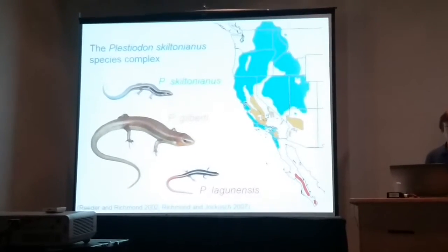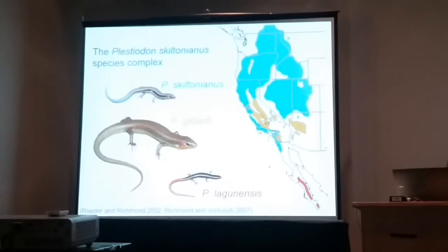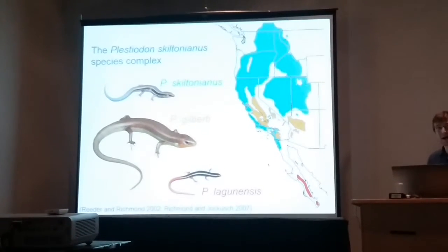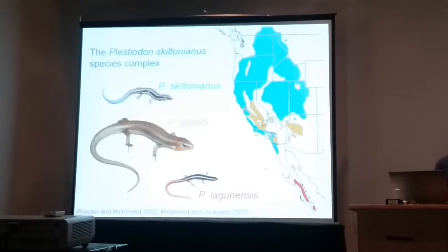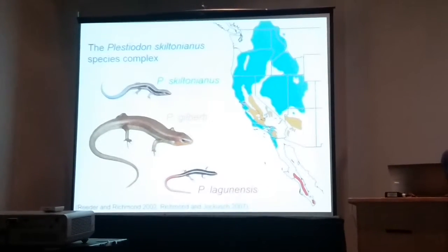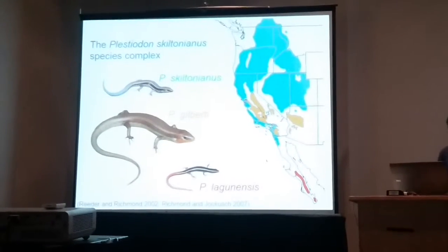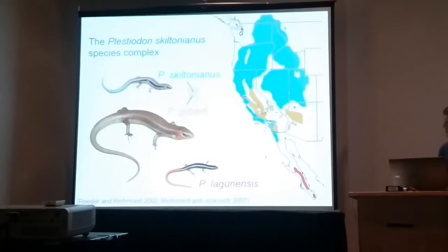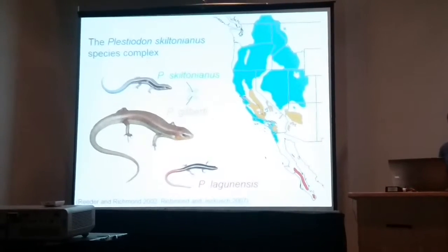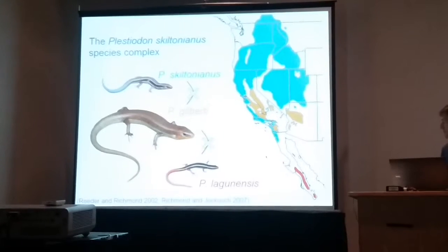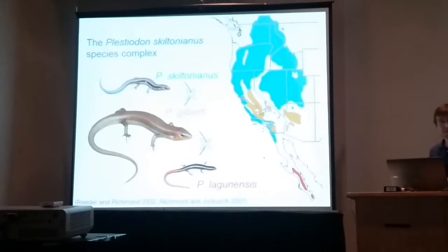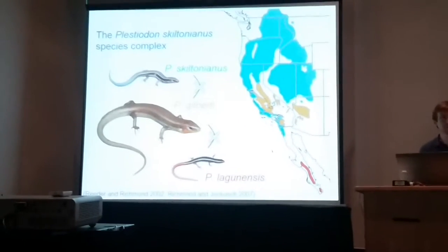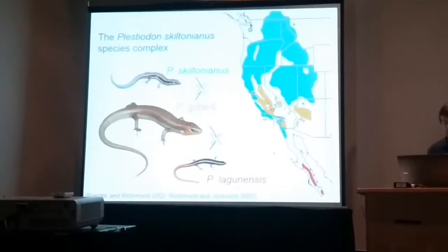My collaborator, Jonathan Richmond, did work in the early 2000s showing that differences in body size actually act as a very strong mechanical prezygotic barrier in this system. The larger skink species, Plestiodon gilberti, could only successfully achieve copulation with other skinks of very similar sizes, and could not successfully achieve copulation posture with its smaller skiltonianus and lagunensis relatives.